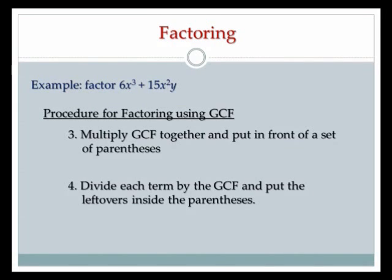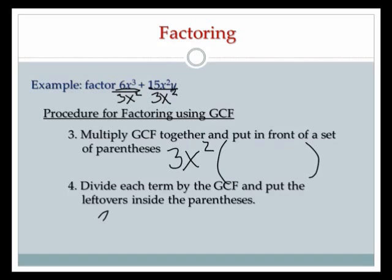Step number 3: multiply the GCF together and put it in front of a set of parentheses. So the GCF is 3x squared. Step number 4: divide each term by the GCF and put the leftovers inside the parentheses. So I'm going to take each term in my polynomial and divide each of them by 3x squared — that gives me what goes inside the parentheses.